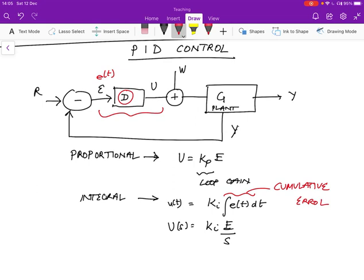And so this means that there will be control action even if the current value of error is zero, as long as there's some accumulated error from the past. Whereas in the proportional case, if the current error is zero, then the control action is going to be zero. Whereas a cumulative error is taken into account with the integral mode.